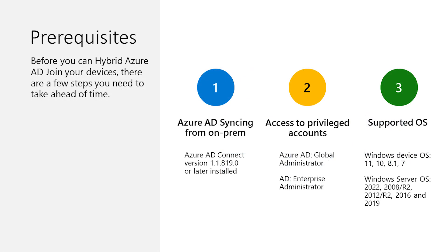Thank you, Jordan. Next, we will take a moment to discuss some of the prerequisite steps needed to properly hybrid join your devices with Azure AD. First, you will need to have Azure AD Connect installed in your environment in order to sync your on-premise domain joined devices to Azure AD. Next, ensure you have access to privileged administrative accounts, which includes a global administrator in Azure AD and an enterprise administrator account in your on-premise Active Directory. Lastly, validate that you have a device that contains a supported operating system. Examples include Windows 11, Windows 10, Windows Server 2019, or Windows Server 2016.